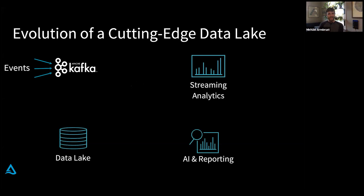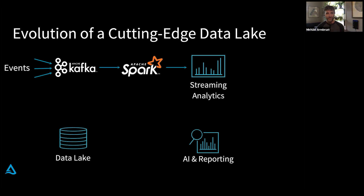I'm obviously a little bit biased, but I would start by using Spark. It has an awesome built-in connector to speak to Kafka. It has streaming APIs that do cool things like event time aggregation. So we can write some Spark SQL queries and get that streaming analytics.